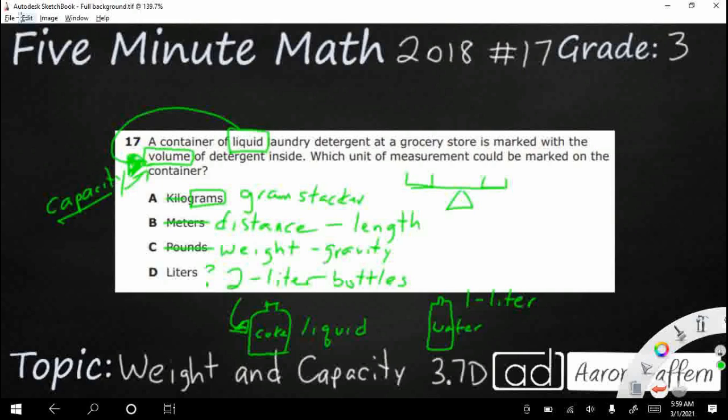Grams actually measures mass, the amount of stuff inside of you. It's kind of like weight, but not the exact same. And we're not dealing with the amount of mass inside these detergent containers. We're actually dealing with the volume, or the liquid capacity, and so that is actually going to be D, liters.